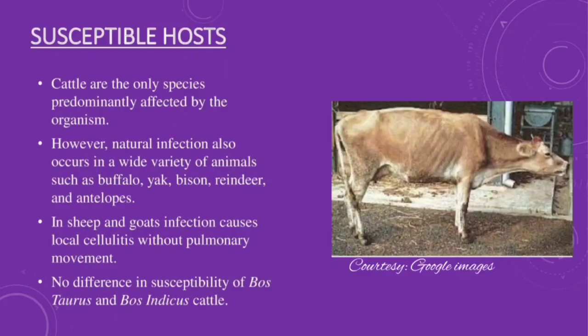Let us now discuss about the susceptible host of this disease. Cattle are the only species predominantly affected by the organism. However, natural infection also occurs in a wide variety of animals such as buffalo, yak, bison, reindeer, and antelopes. In sheep and goat, infection causes local cellulitis without pulmonary involvement. No difference in susceptibility of Bos indicus and Bos taurus cattle was observed.